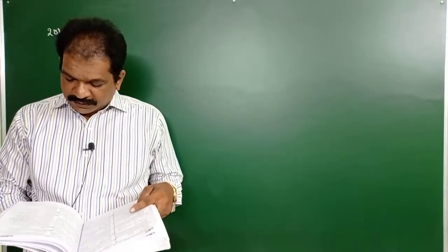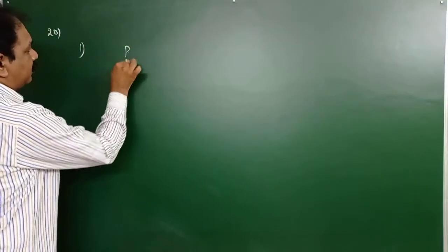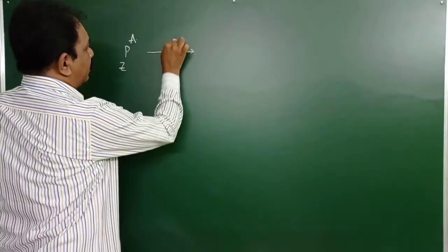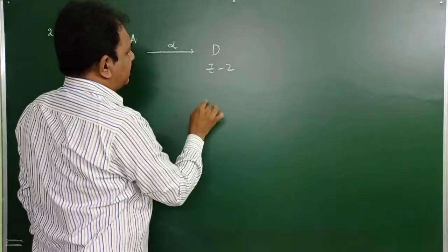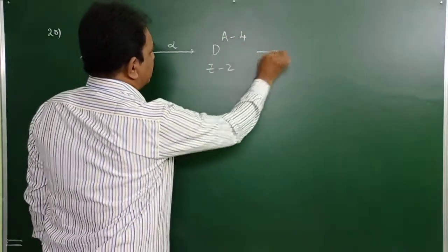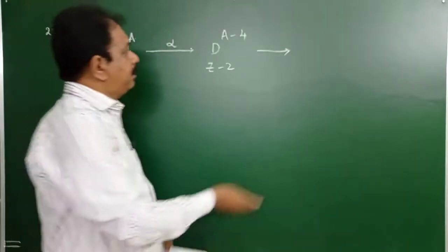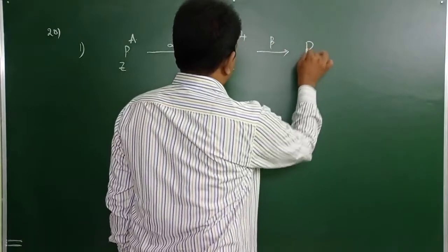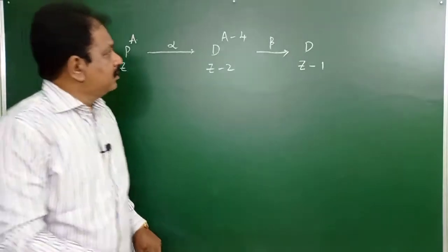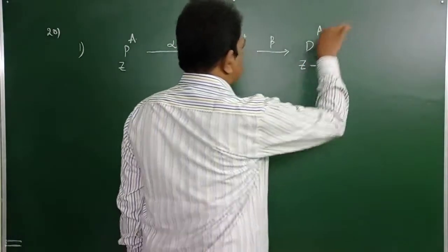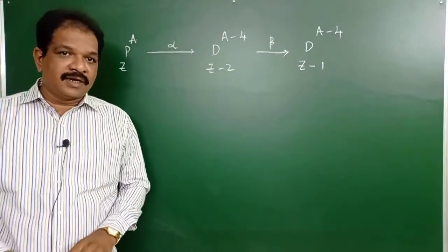Option 1: 1 alpha + 1 beta. Parent nucleus emits 1 alpha: atomic number decreases by 2, mass number decreases by 4. Then 1 beta: atomic number becomes Z−2+1 = Z−1. These two are not isotopes because atomic numbers are not the same. So option 1 is not the answer.